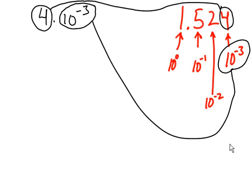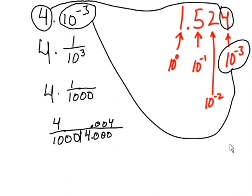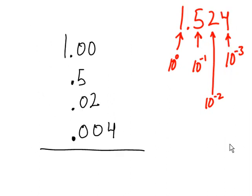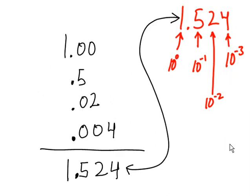Go to the next column: 4 times 10 to the negative 3 power. That becomes 4 times 1 over 1,000, which becomes 4 over 1,000, and 1,000 into 4.000 becomes 0.004. Let's add these up, and we're going to get 1.524. It matches — what do you know?